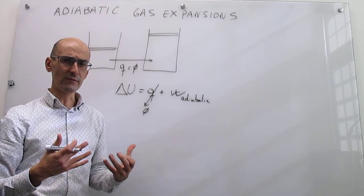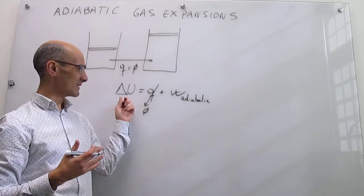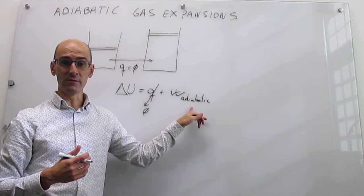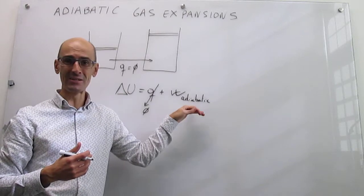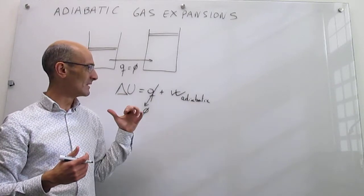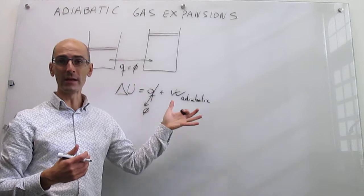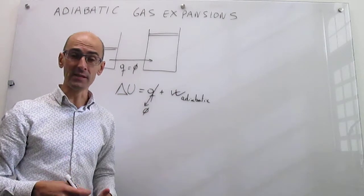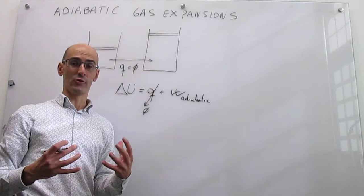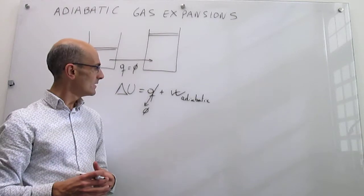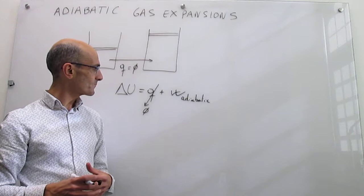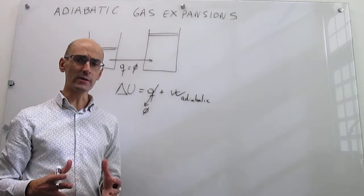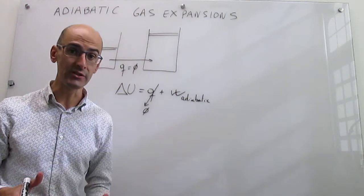So far we have how the first law looks, but there's no clear way to calculate ΔU or the adiabatic work. We're not assuming the process is reversible or at constant external pressure, so we don't have a good expression for that work. In this video we're going to try to see how we begin to think about that.